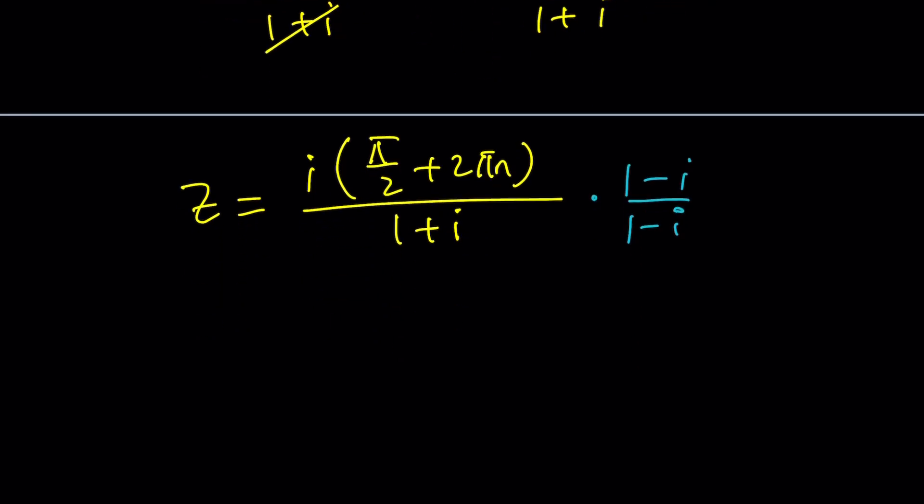And now we will use the conjugates let's use them 1 minus i 1 minus i and in the numerator we're going to get something like this. First of all this is something times pi so you can kind of think of it as ki so when you multiply by 1 minus i first you're going to multiply that by 1 which is going to give you the same thing right and then minus i times i is i squared.